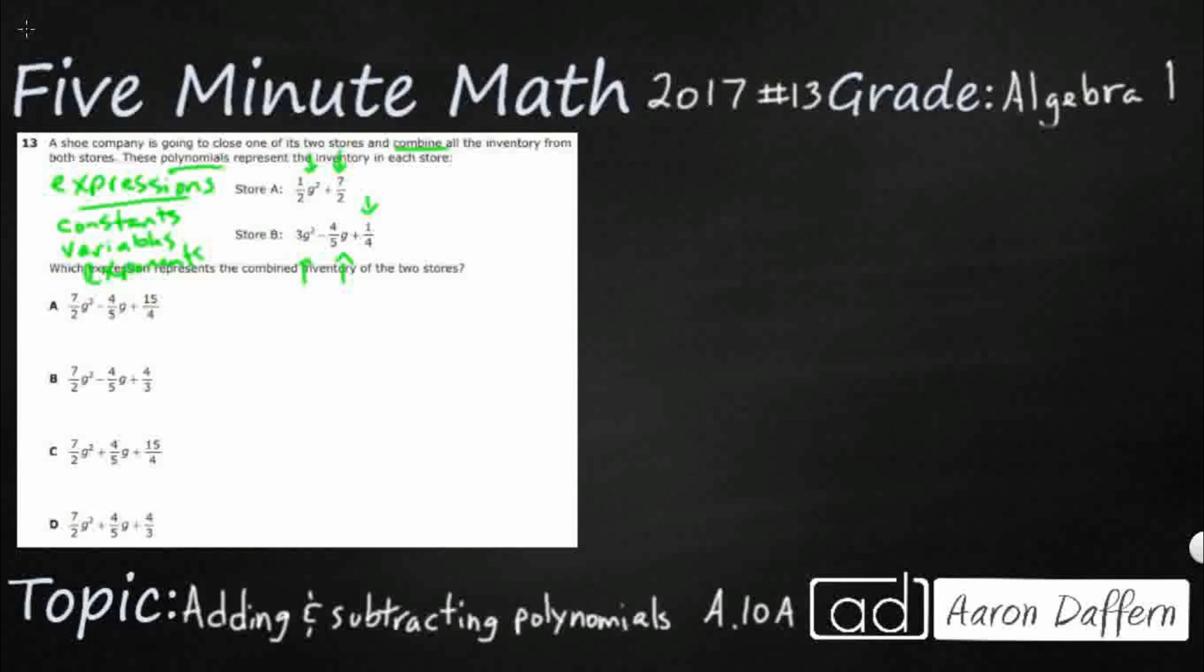So which expression represents the combined inventory of the two stores? Well first, let's just go ahead and write a larger expression here. So I'm going to have 1 half G squared plus 7 halves. And then I'm just going to add this second right here. 3 G squared minus 4 fifths G plus 1 fourth.